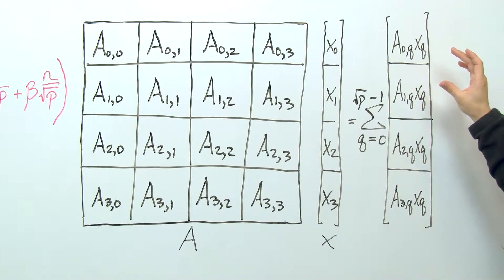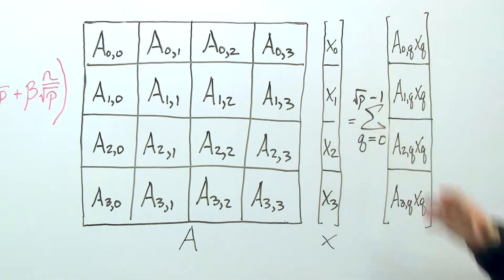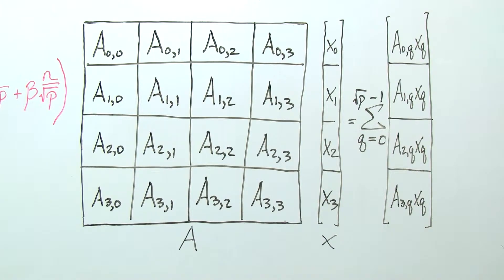But the amount of communication that happens in order to do this is much less. And the reason is that each process only computes a subset of the final result and it also only needs a subset of the input. And so those two combinations are what lead to the better scalability and that's why we need a two-dimensional data distribution.